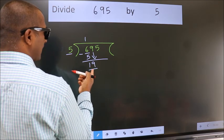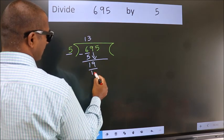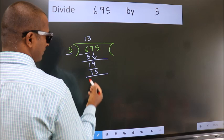A number close to 19 in the 5 table is 5 threes, 15. Now we subtract.